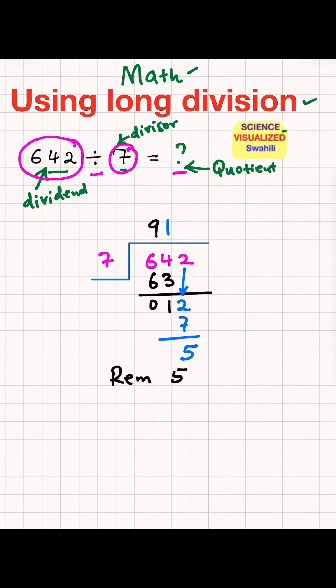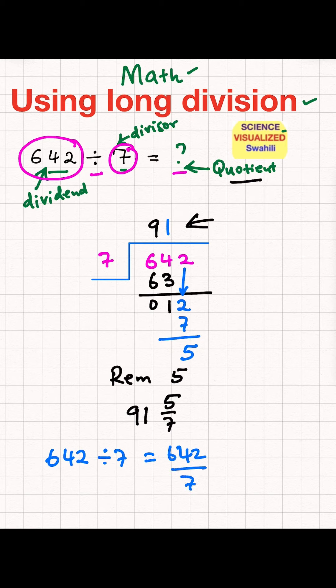And therefore the answer equals to this number, 91 and 5 over 7. So you put the remainder over 7, and that's going to be the quotient or the answer. So therefore, 642 divided by 7, which also equals to 642 over 7, the answer for that is 91 and 5 over 7.